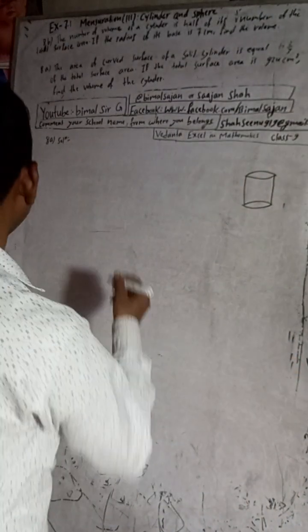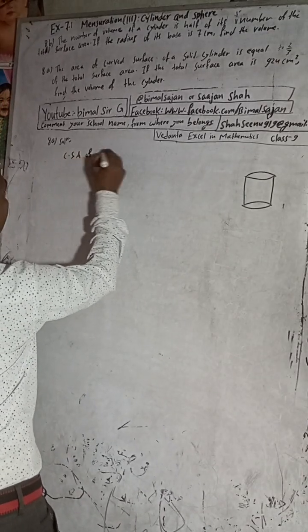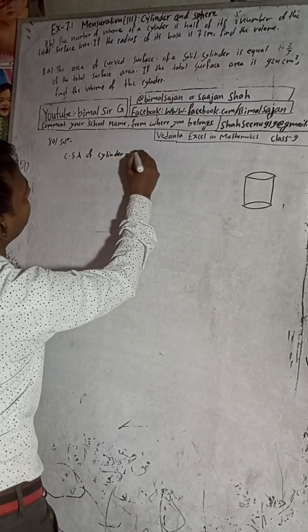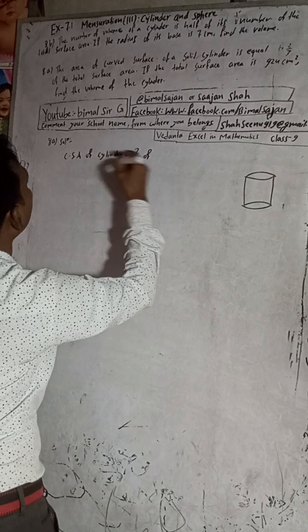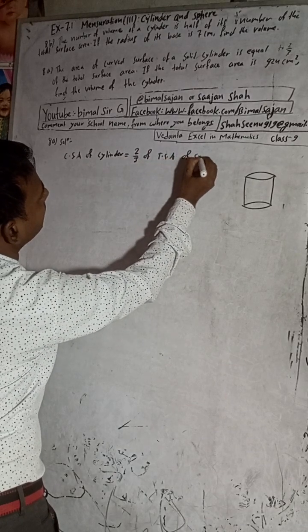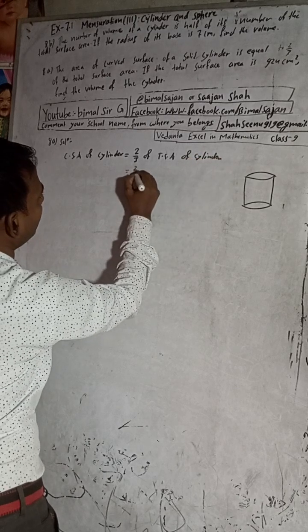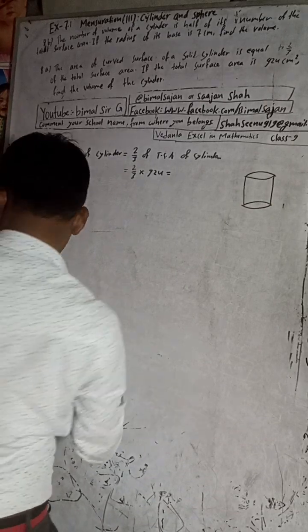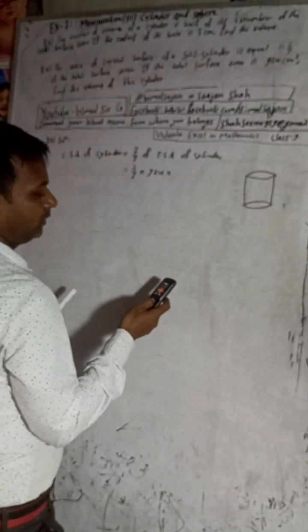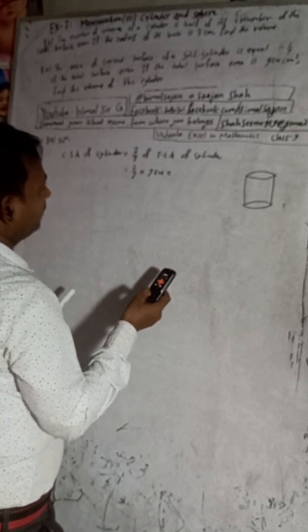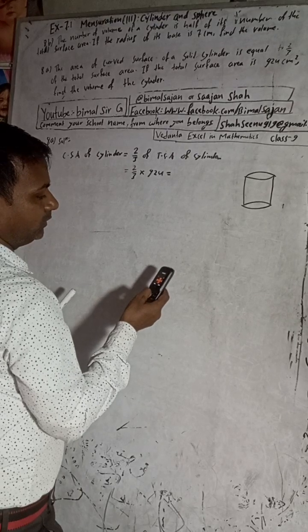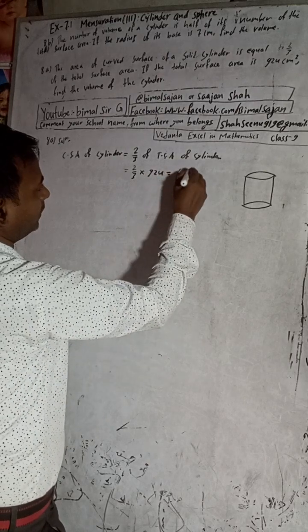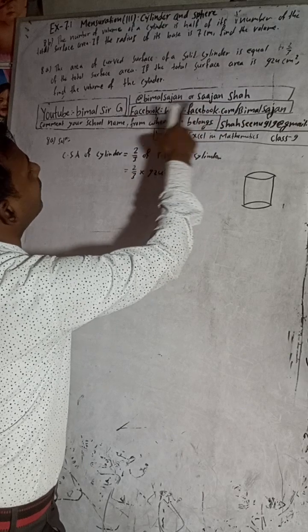The curved surface area means the outer surface of the cylinder — without the top and bottom circles. Curved surface area is equal to two-thirds of the total surface area. Since total surface area is 924 cm², we calculate: 924 × 2/3 = 616 cm². So the curved surface area is 616 cm².